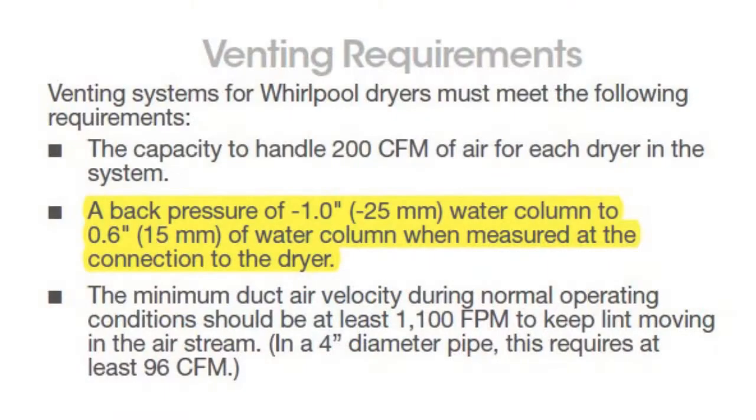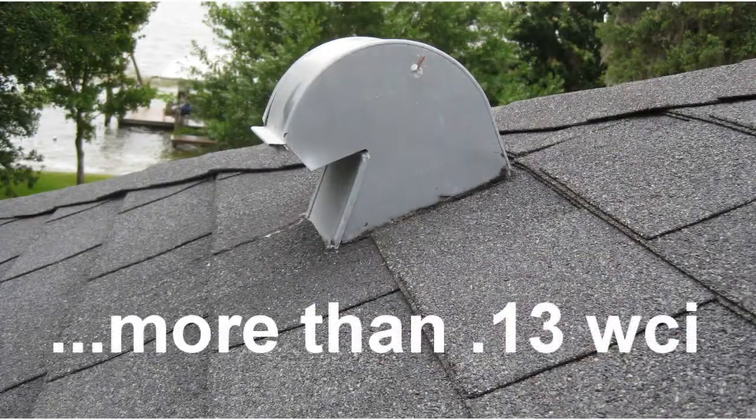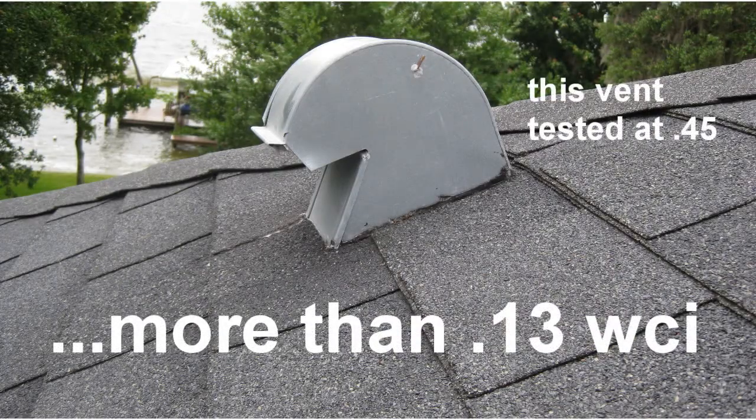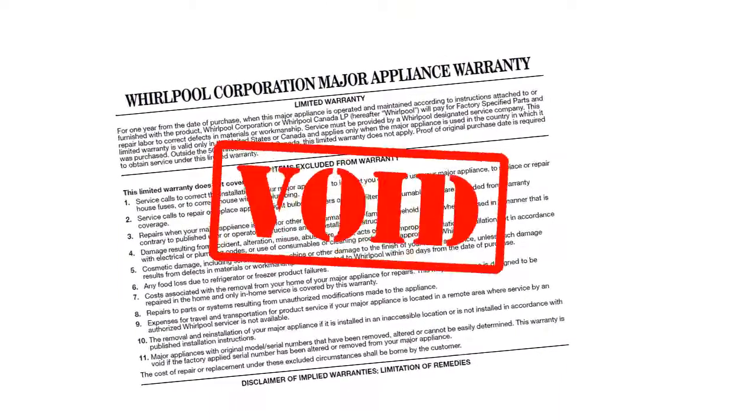What's interesting is that a popular appliance manufacturer requires dryer exhaust systems to not exceed 0.60 water column inch of pressure. In our typical scenario, a roof termination that provides more than 0.13 of pressure would violate the manufacturer's design limitations and possibly void the warranty.